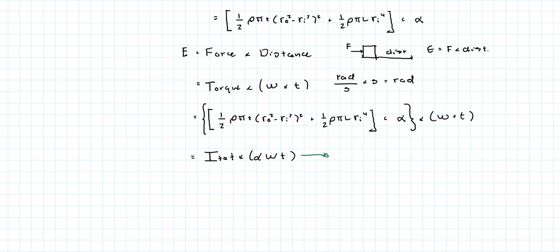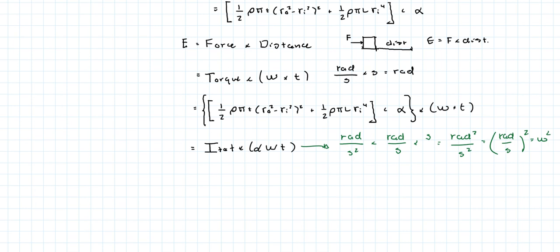And what is that equal to? So let's look at the units. Angular acceleration is rads per second squared times rads per second times seconds. Well, that's equal to rads squared per seconds squared. And really what that is, is velocity squared.